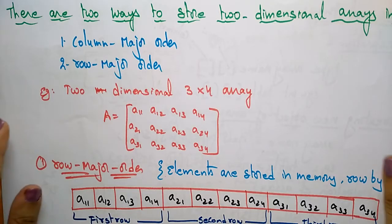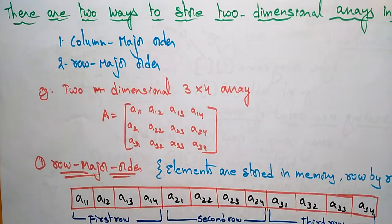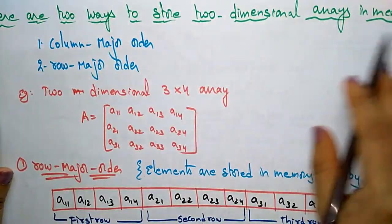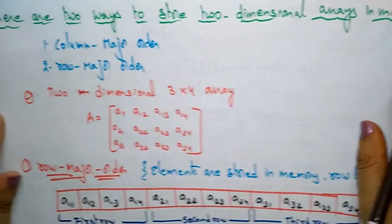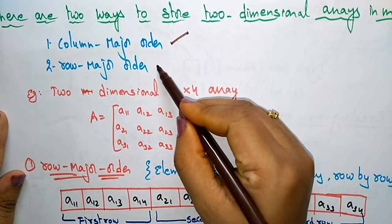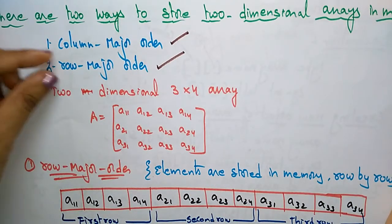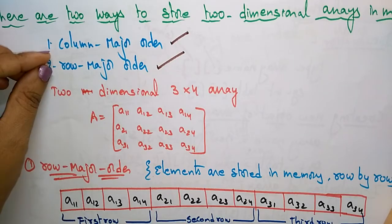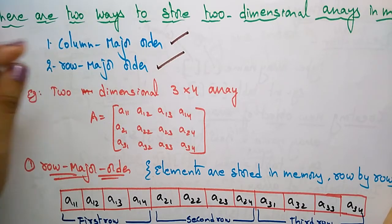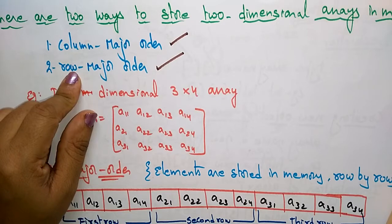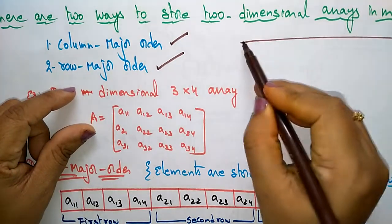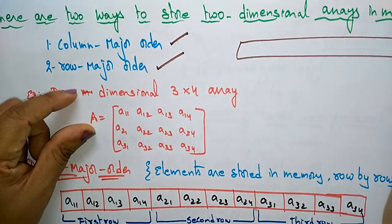Now let us see how a two dimensional array is stored in memory. There are two ways to store two dimensional arrays in memory: column major order and row major order. Whatever order you have taken, the memory will store the data in linear form.